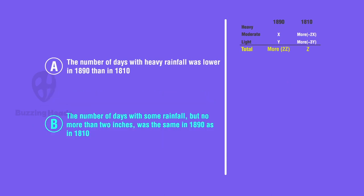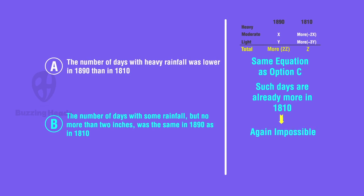B. The same equation as option C. But, it has been mentioned that such days are same in 1890 and 1810. Again, impossible. Such days are already more in 1810. Eliminated.